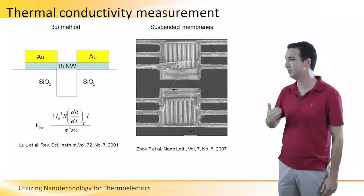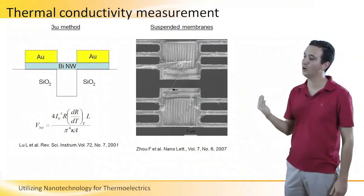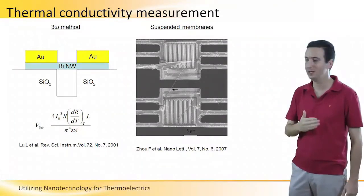by joule heating, heats the nanowire and causes an alternating temperature along the nanowire.